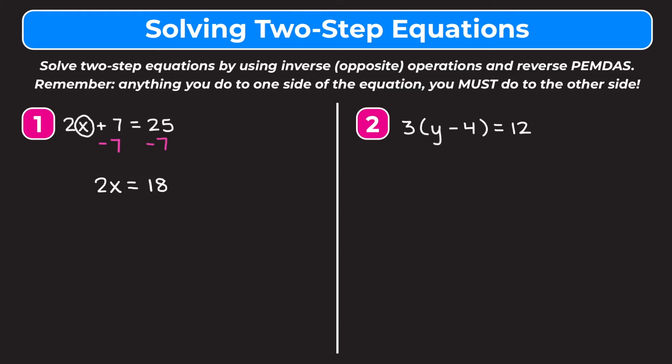Now we have a one-step equation: 2x equals 18. We have to get rid of this 2 which is being multiplied by x, so we do the inverse of multiplication, which is division. We divide the left side by 2 and the right side by 2. On the left, 2 divided by 2 is 1, so we're just left with x. On the right, 18 divided by 2 is 9. So x is equal to 9.